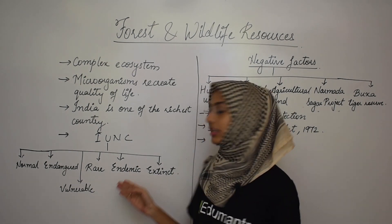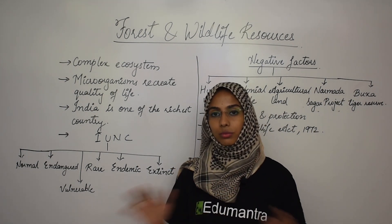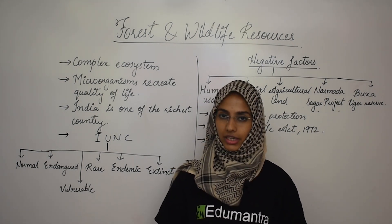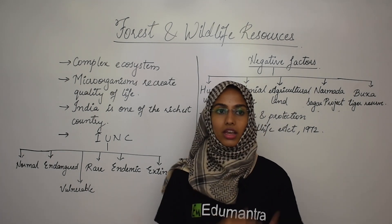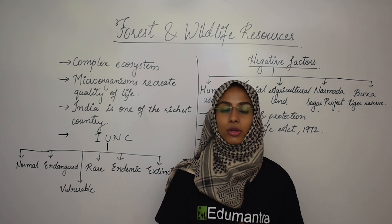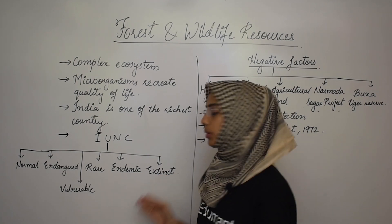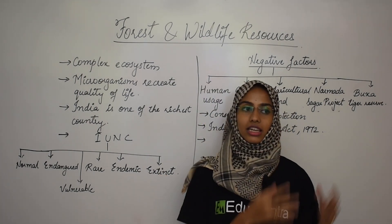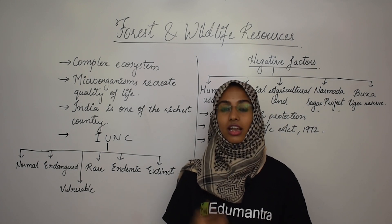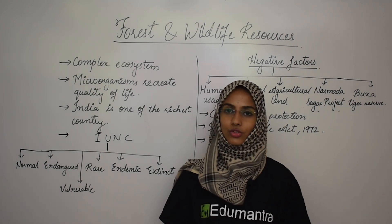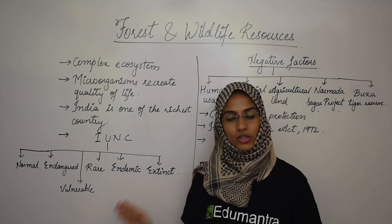The next one is the endemic species — these cannot be found in just any area; they are found in specific areas only, and their movements are restricted because of natural and geographical barriers. The last one is the extinct species — those that have already gone extinct and cannot be found anywhere. The famous example would be dinosaurs, which cannot show up on the earth anymore.